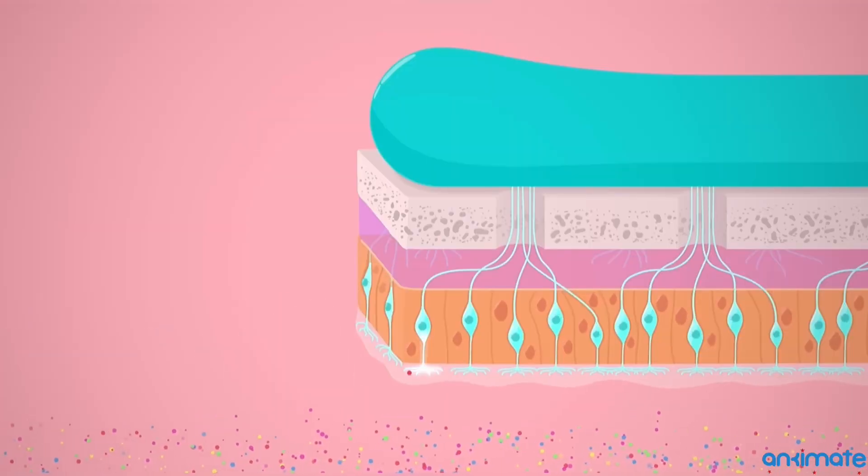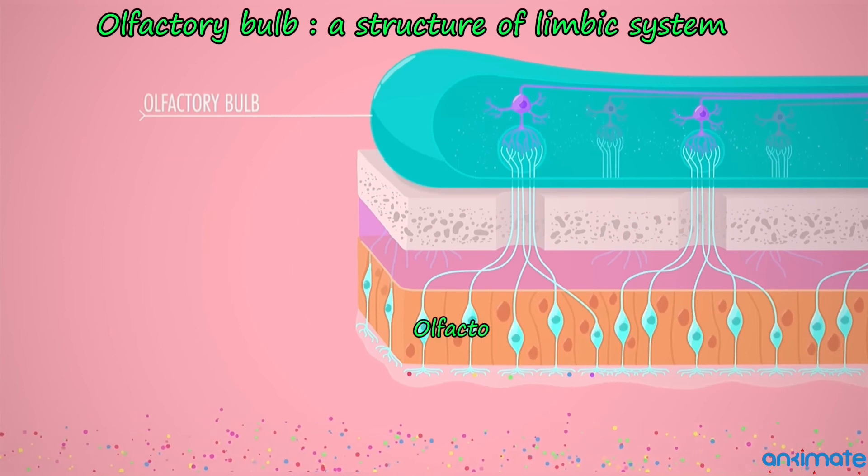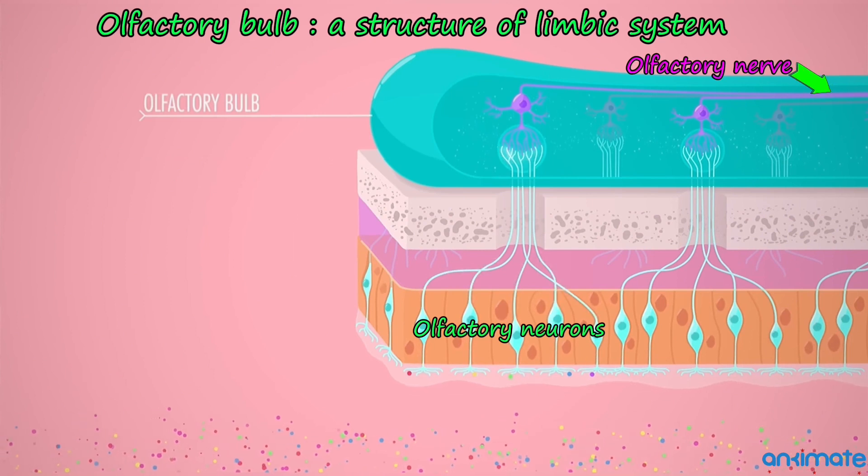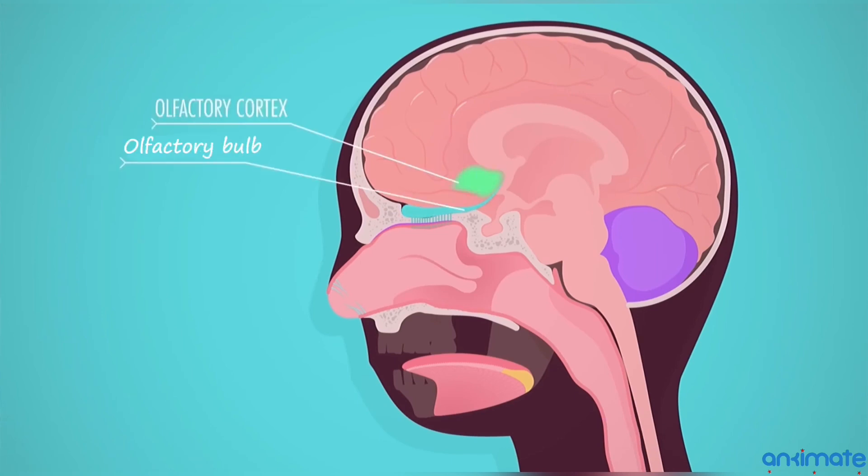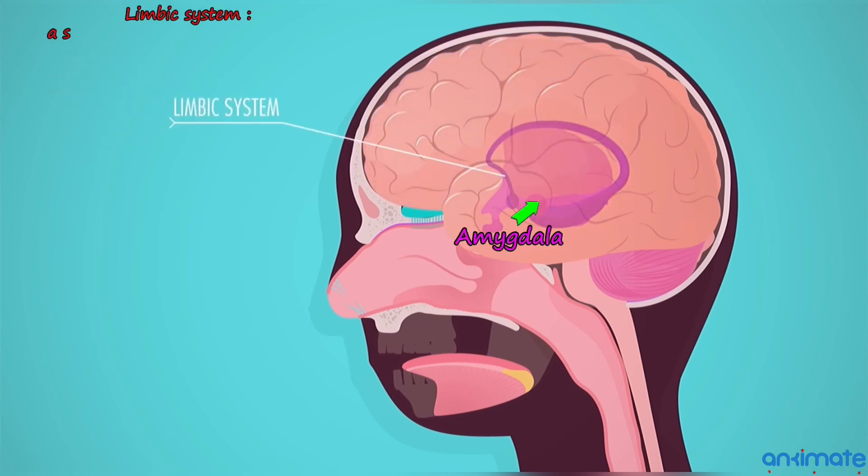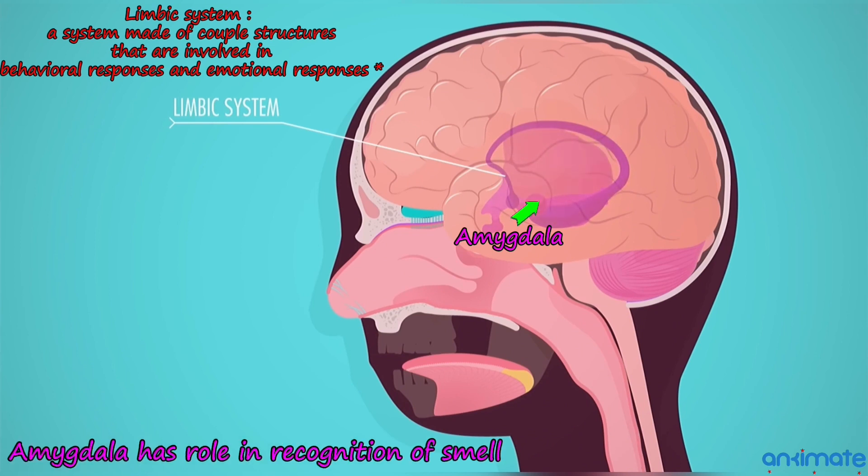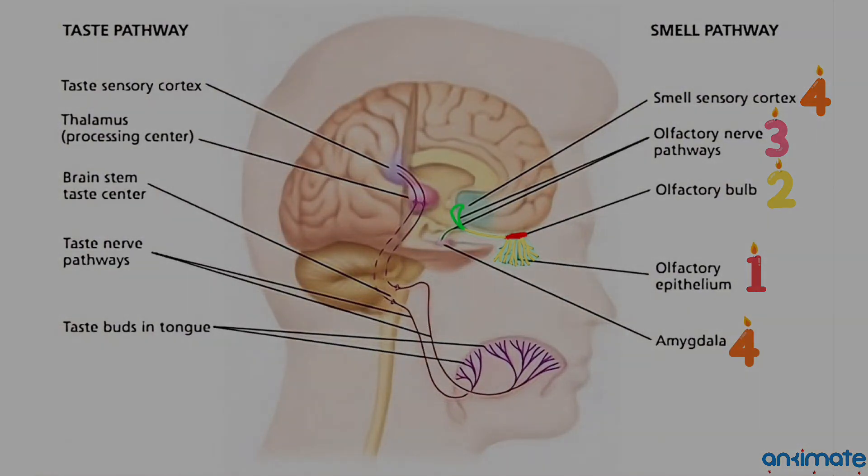The olfactory receptor cells send signals to the olfactory bulb via the olfactory nerve. The olfactory nerve then sends signals to two regions of the brain: the olfactory sensory cortex in the frontal lobe, and the amygdala, a structure of the limbic system believed to be involved in recognition.